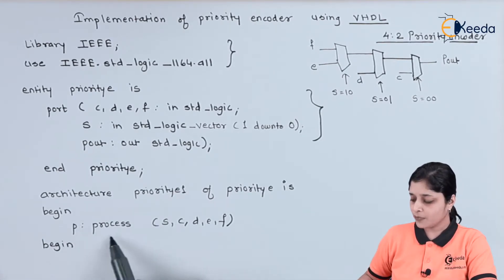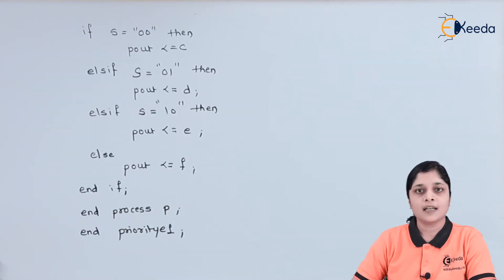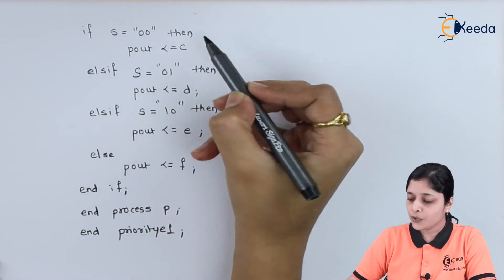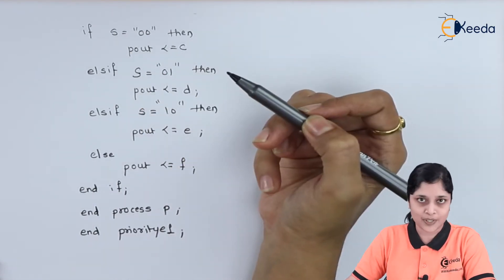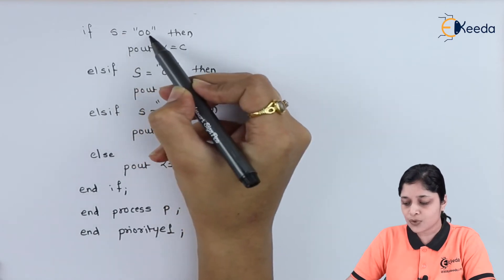Inside the architecture, we have mentioned inside the process S, C, D, E, and F. Then your main logic comes. We will use here to design the program if-else statements. So if S is equals to 00,